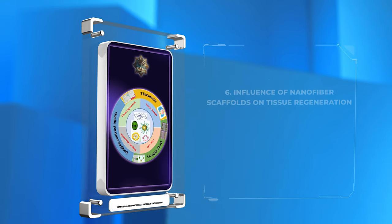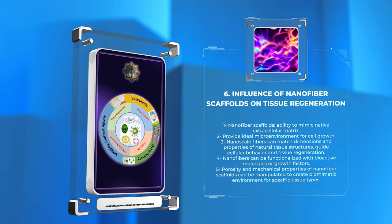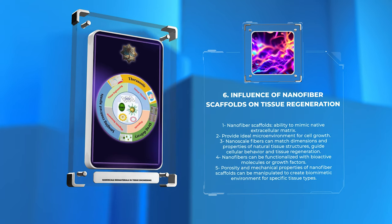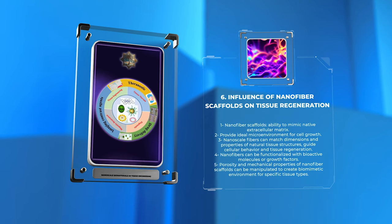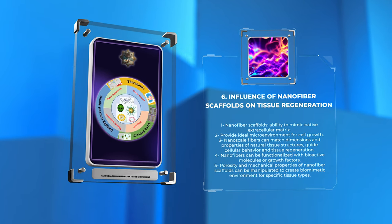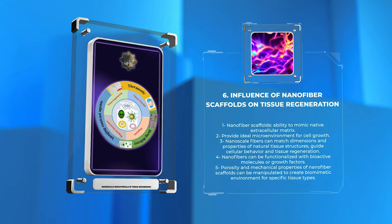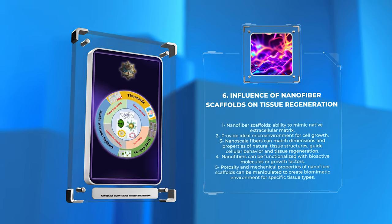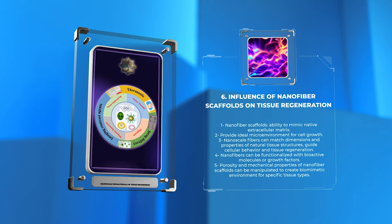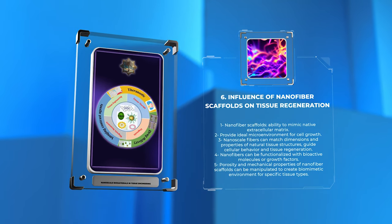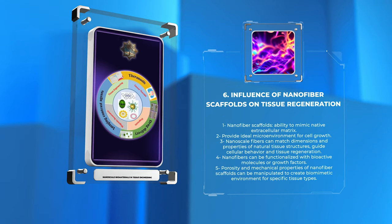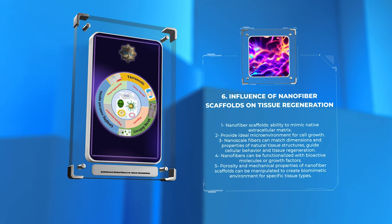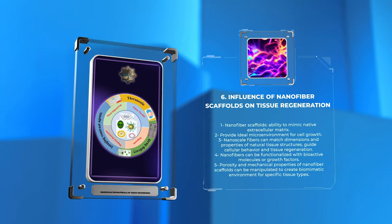Nanofiber scaffolds have gained significant attention in tissue engineering due to their ability to mimic the native extracellular matrix and provide an ideal microenvironment for cell growth. These scaffolds possess a high surface area, providing ample space for cell adhesion and proliferation. Moreover, the nanoscale fibers can be tailored to match the dimensions and properties of natural tissue structures, thereby guiding cellular behavior and tissue regeneration. The nanofibers can be functionalized with bioactive molecules or growth factors to further enhance cellular responses. Additionally, the porosity and mechanical properties of nanofiber scaffolds can be manipulated to create a biomimetic environment for specific tissue types, facilitating their regeneration and integration within the host tissue.